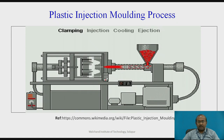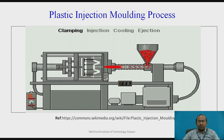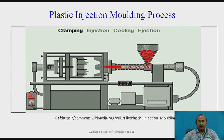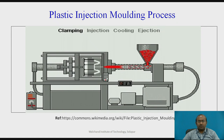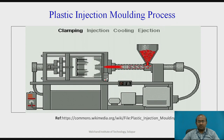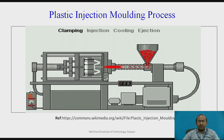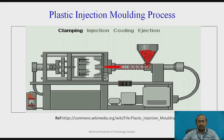The first stage is clamping. In clamping, the movable platen moves forward through the hydraulic piston-cylinder arrangement. The movable platen carries the movable mold half, which is matched to the fixed mold half. This first stage provides the mold cavity — for mold cavity generation, the two halves must be perfectly matched with one another.